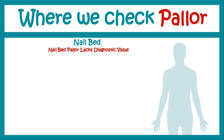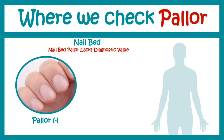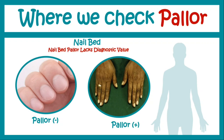However, nail bed pallor lacks diagnostic value according to MacLeod's. This nail bed looks normal with no pallor, while in this other image the nail beds appear pale and whitish — pallor is present. Some doctors also prefer to check pallor in the nail beds and soles of the lower limbs, but as per MacLeod's that is not essential. Check with your professors at your particular medical school — if they ask you to check pallor in the lower extremity, do so; otherwise it is not necessary.